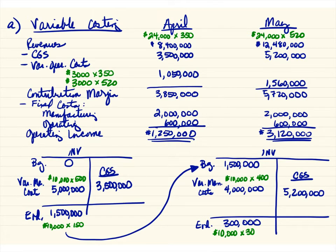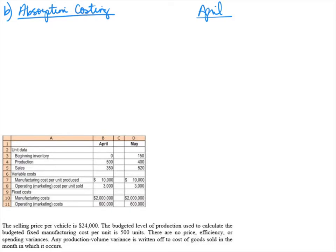Now let's look at absorption costing. Absorption costing is the method approved by GAAP and uses a gross profit income statement. Revenues are the same under either method — $8,400,000. Under absorption costing, cost of goods sold absorbs all product costs: direct materials, direct labor, variable overhead, AND fixed overhead. So fixed manufacturing costs are also absorbed into cost of goods sold.